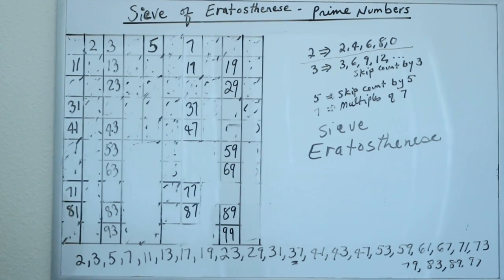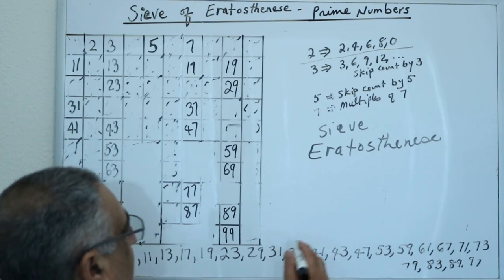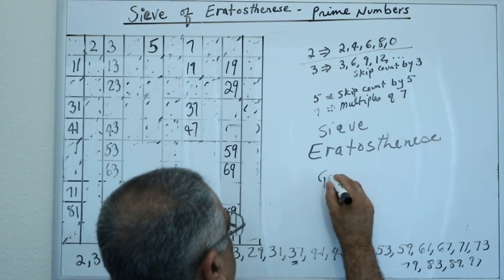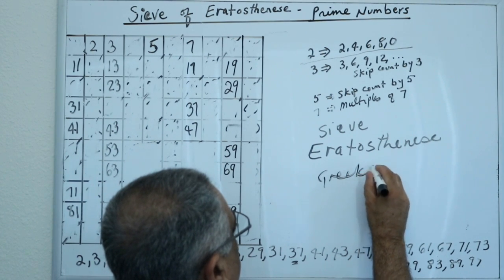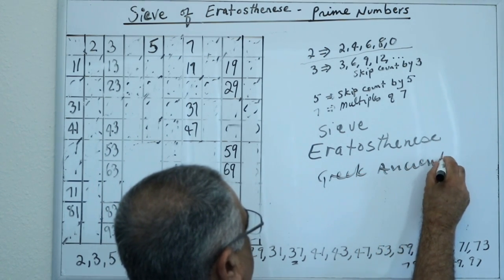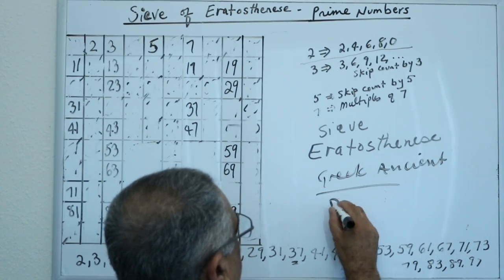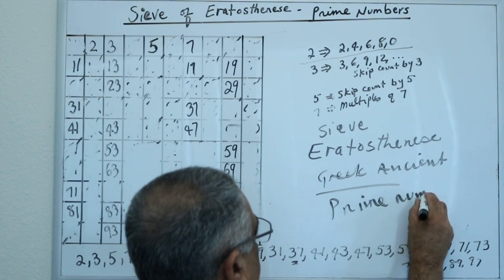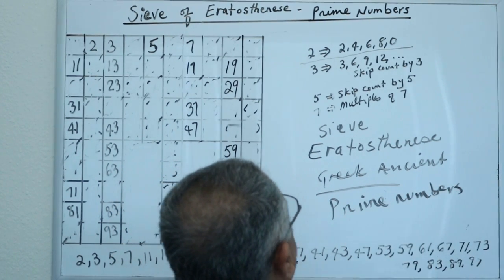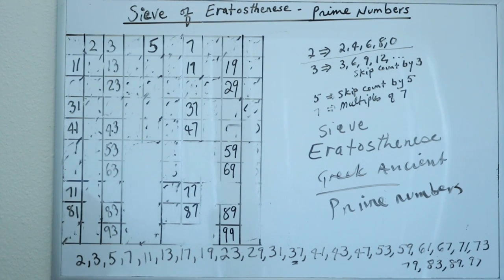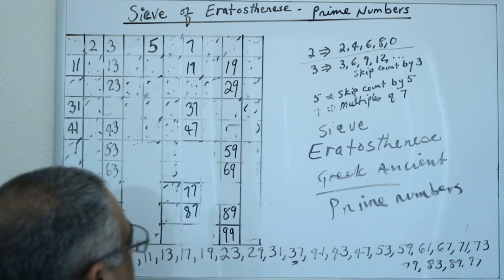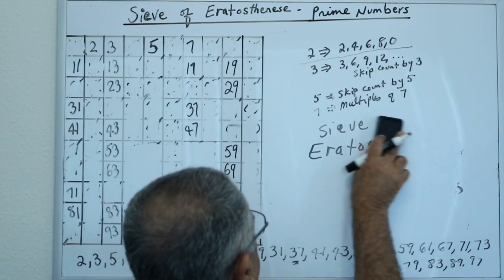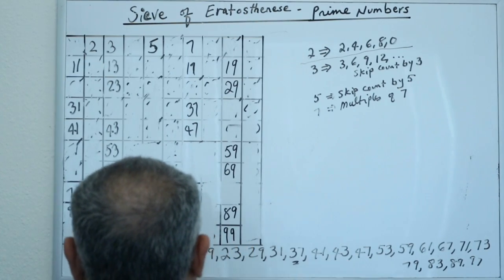And so this is the whole idea of the Sieve of Eratosthenes. Eratosthenes, this is Greek, ancient Greek, long time ago. Prime numbers are very important. And that's it. So that's the idea of the Sieve of Eratosthenes. And thank you for watching.